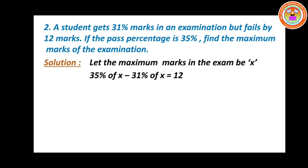So: 35 percentage of x minus 31 percentage of x — because in the question a student got 31 percentage in an examination and fails by 12 marks, and the pass percentage is 35. So you will be writing: 35 percentage of x equals 31 percentage of x plus 12. When you bring the 31 to the other side it changes into minus. So you can write directly: 35 percentage of x minus 31 percentage of x equals 12.